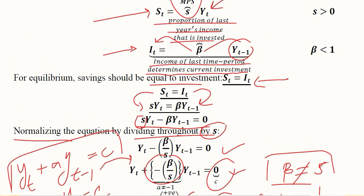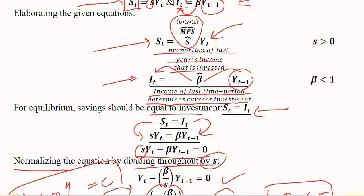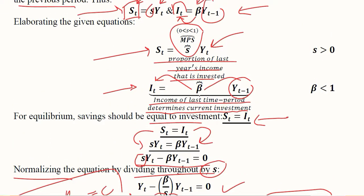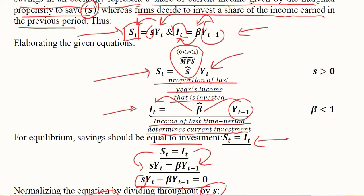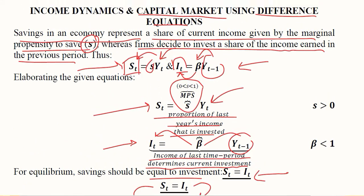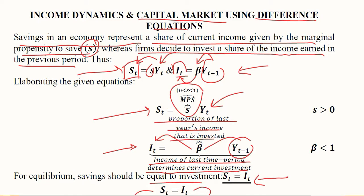This was the formation of savings and investment function. Finally, we can say that income dynamics are understood by keeping in our observation the equilibrium in the capital market. Thank you.